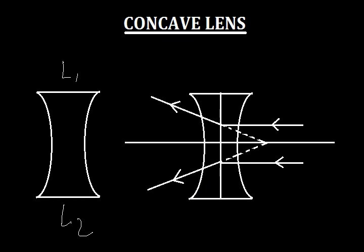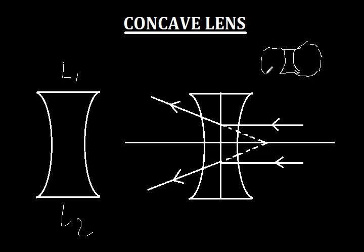Similar to the convex lens, this concave lens also has two spherical surfaces. These spherical surfaces are parts of two spheres. The two centers are the centers of curvature of the concave lens.